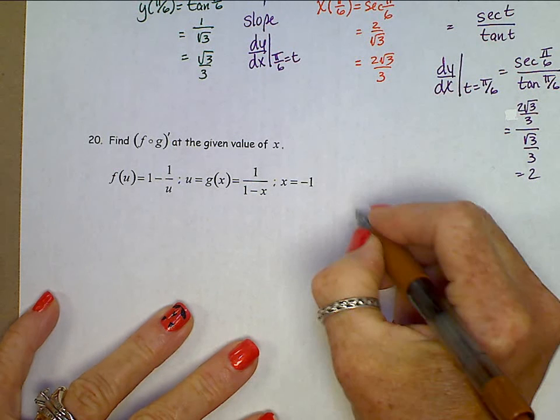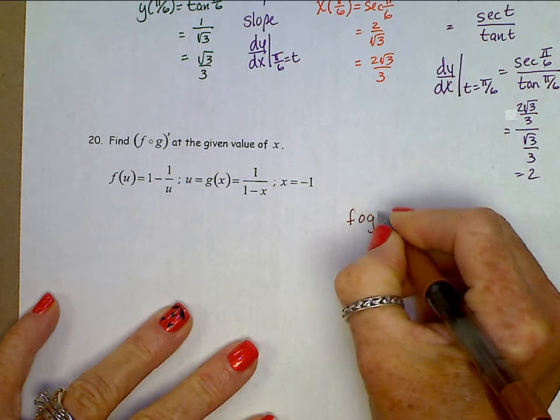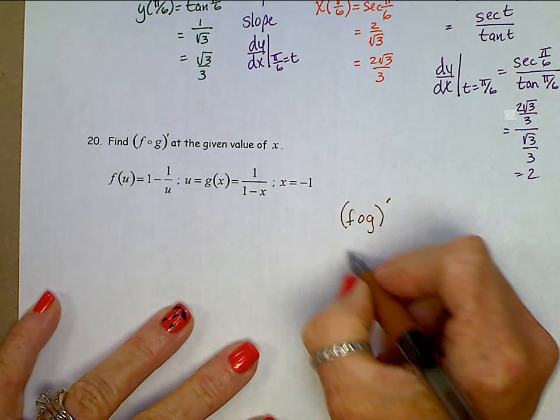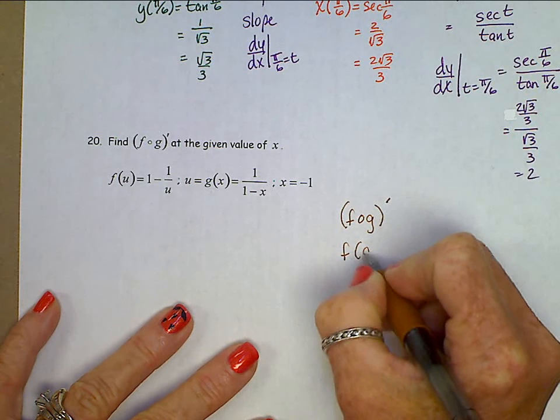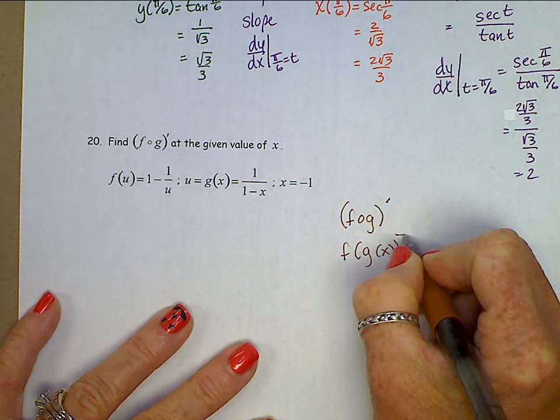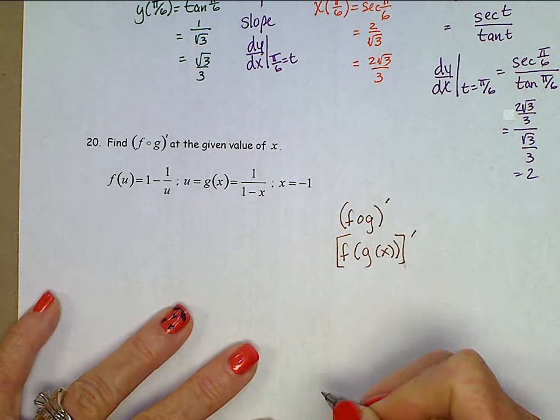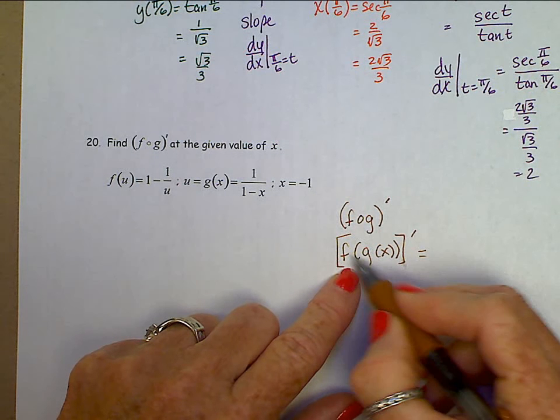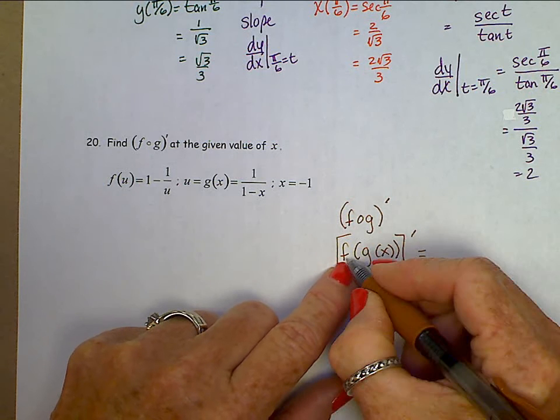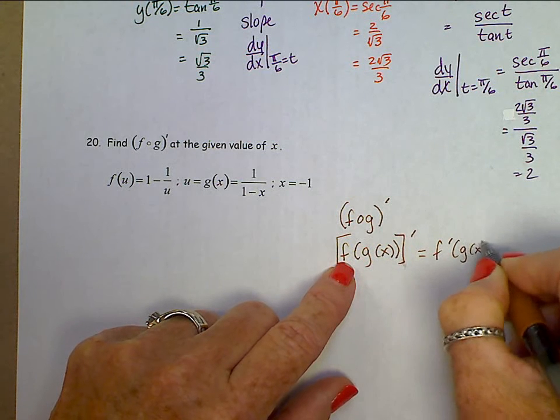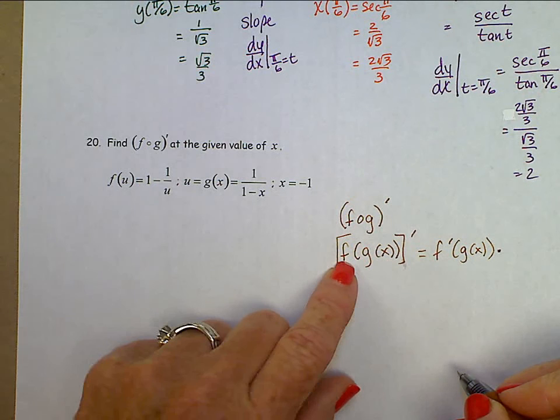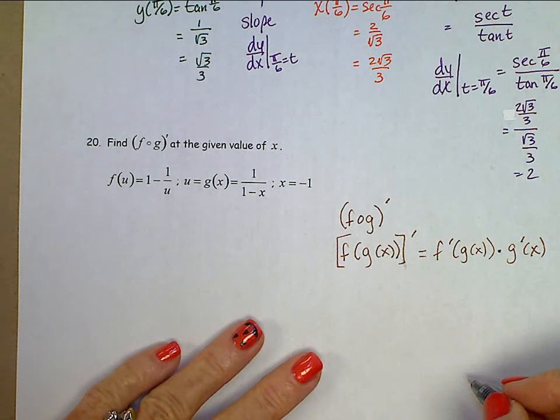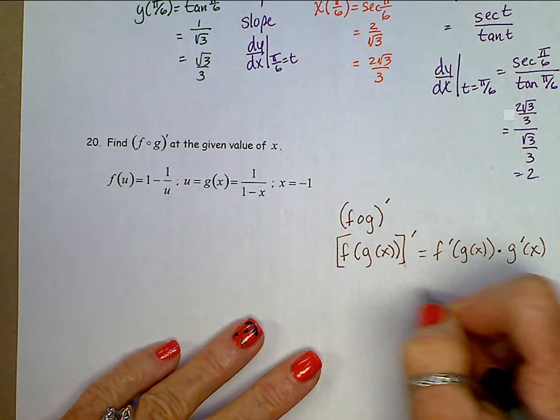We want to find f of g prime. If we write that out in nested notation, this is f of g of x prime. And if we work on through that, we have these nested functions, the composition. So the outside most, f prime of g of x times g prime of x.